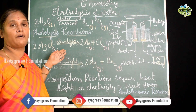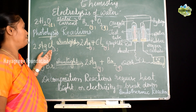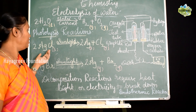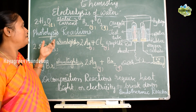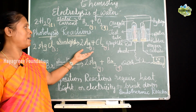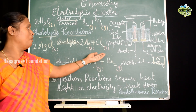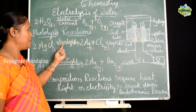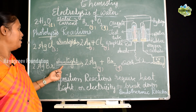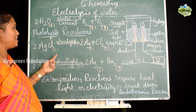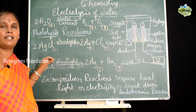Two more examples of decomposition reactions are called photolysis reactions. Silver chloride AgCl, when left exposed to sunlight, turns from white to gray, decomposing into silver and chlorine gas. Similarly, silver bromide in the presence of sunlight decomposes into silver and bromine. Since these reactions take place in the presence of light, they are called photolysis reactions.